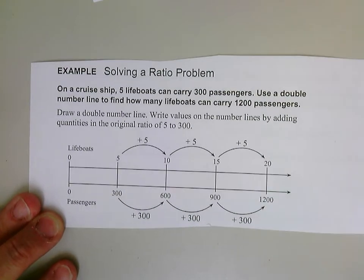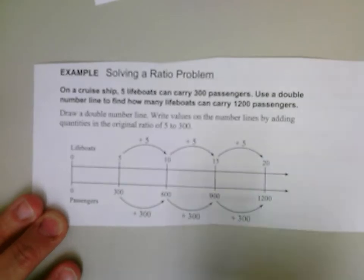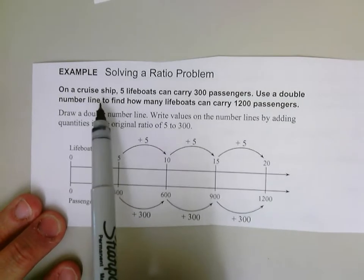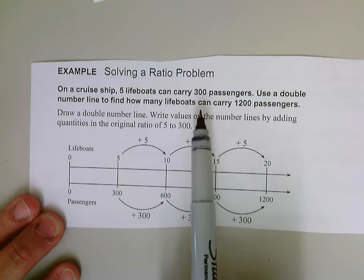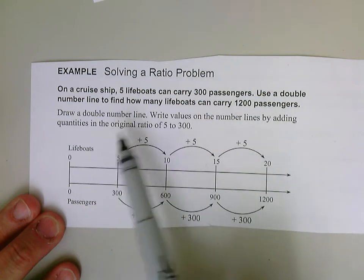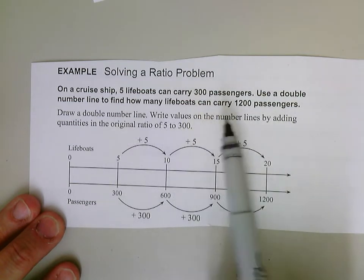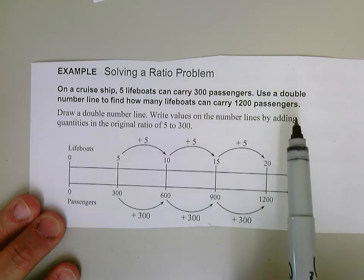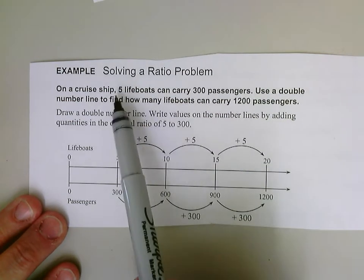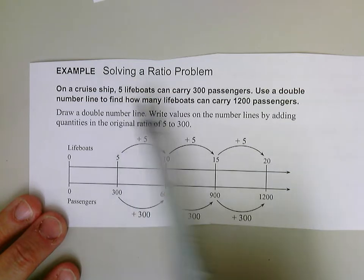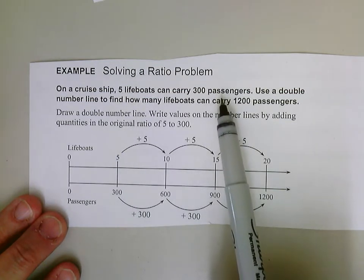So let's try a problem with this double number line. It says, on a cruise ship, five lifeboats can carry 300 passengers. Use a double number line to find how many lifeboats can carry 1,200 passengers. So it's kind of like we have a ratio of five lifeboats to every 300 passengers, all right?